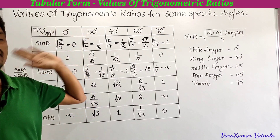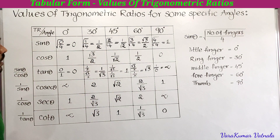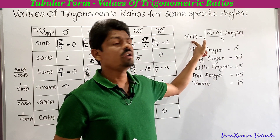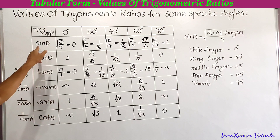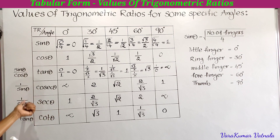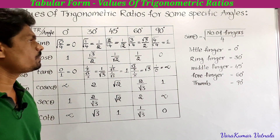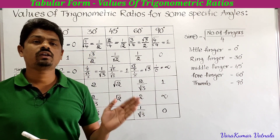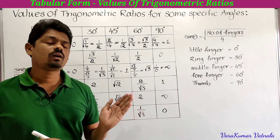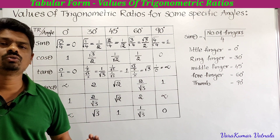This is the complete tabular form of trigonometric ratios for specific angles. It is very very important. If you remember sine, you can write all the remaining ratios easily: cosine is sine reversed; tan is sine divided by cosine; cosec, sec, and cot are reciprocals of sine, cosine, and tan respectively. Read and write it many times to get it perfect. That's all for today's class. We will meet in the next class by doing problems in Exercise 11.2. Thanks for watching.